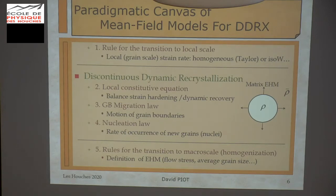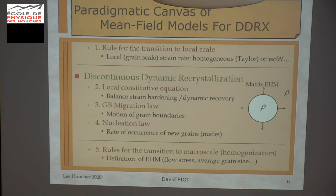The last point, not directly related to recrystallization, is to have some rules for the transition to the macro scale, in which we have the definition of the equivalent homogeneous matrix to define what is the average dislocation density. And also it is a way to obtain predictors for the flow stress, the average grain size, and so on.